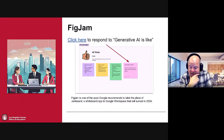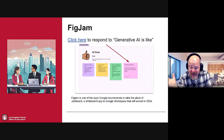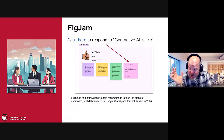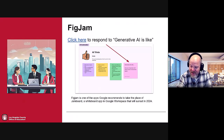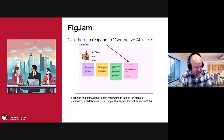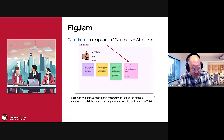The nice thing about FigJam is it's really good for any age. They have some AI built into it — you can use the AI in FigJam to write prompts or create really cool boards that your kids, students, staff, or whoever can work on.